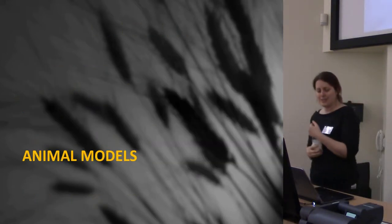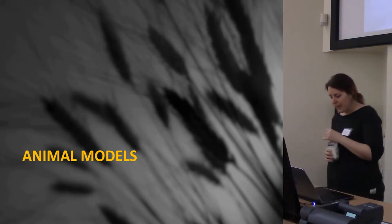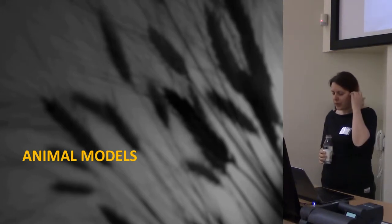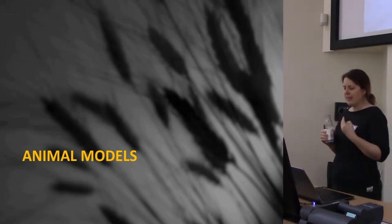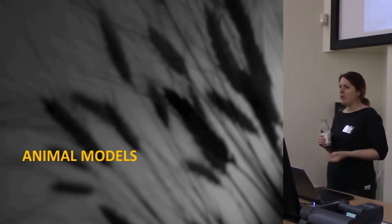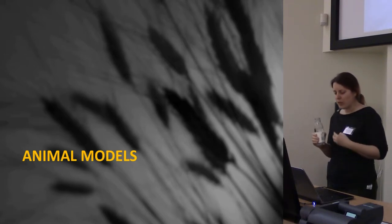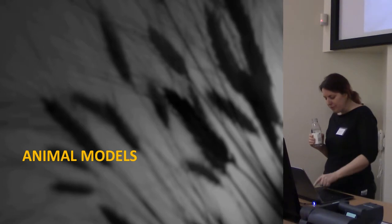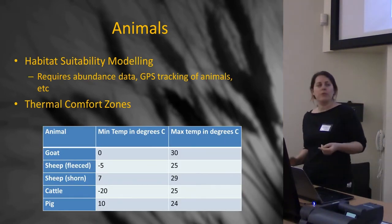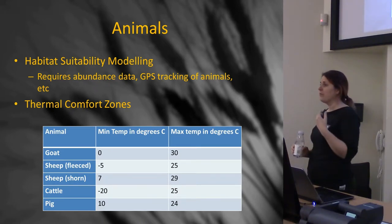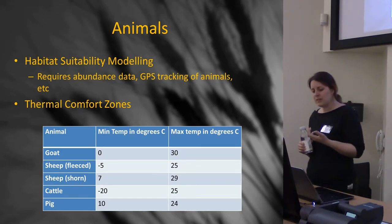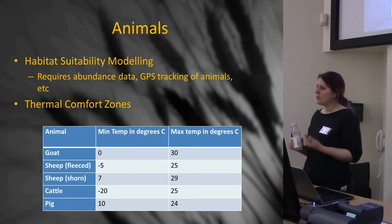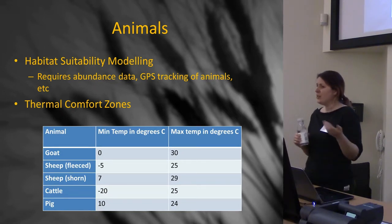I didn't just stop at crops — I went for animals as well. This is something I was particularly interested in during my PhD work, because the complexity of models I was having to create made it difficult to integrate all the different aspects of farming, particularly subsistence farming where you're taking into account lots of different types of activities. I started looking at how modern people look at animal behaviour and pastoralism. There's lots about habitat suitability modelling, but it's very much based on observational data — you require abundance data, you GPS-track your animals. And how relevant is that to past societies anyway?